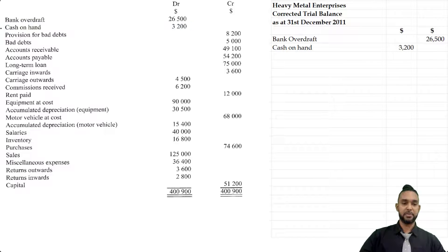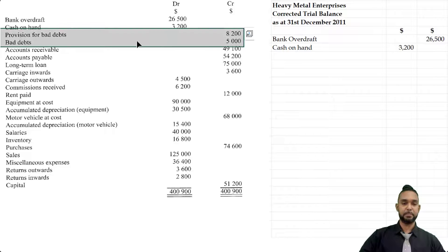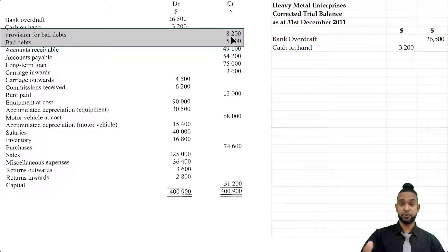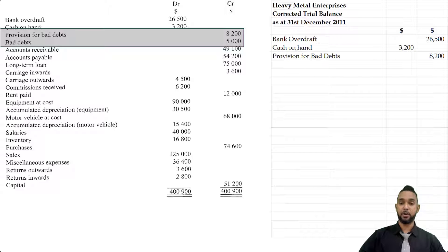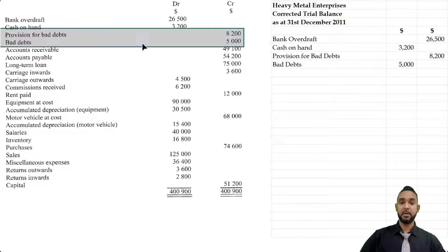Next we have the provision for bad debts and bad debts. The provision for bad debts is a contra asset — its function is to reduce the value of an asset, specifically debtors or accounts receivable, in the balance sheet. Debtors have debit balances, so the provision must have the opposite balance — a credit balance. Bad debts, however, is an expense and expenses have debit balances.